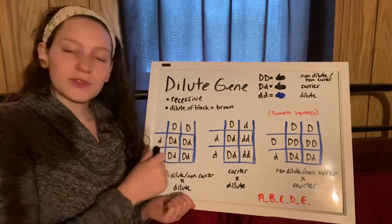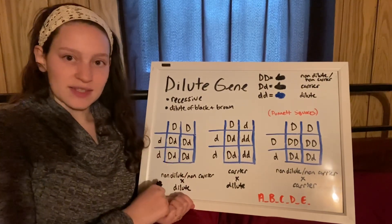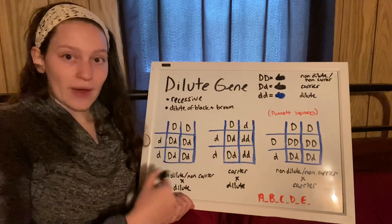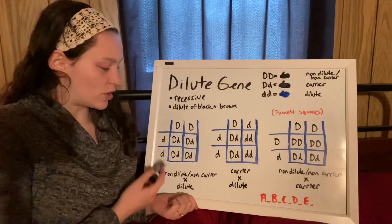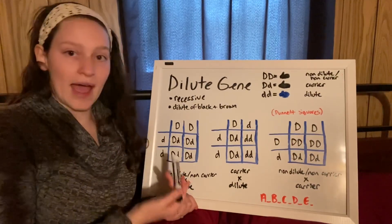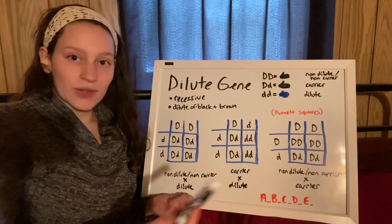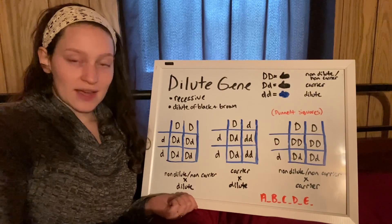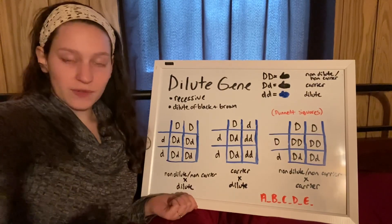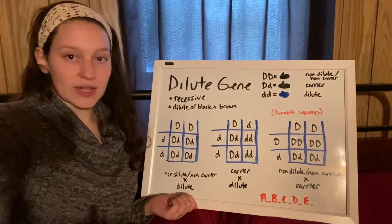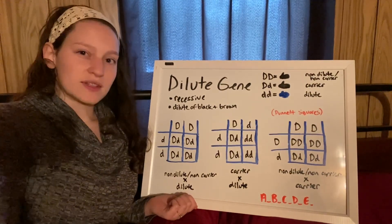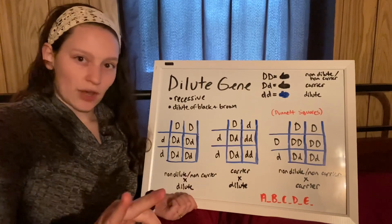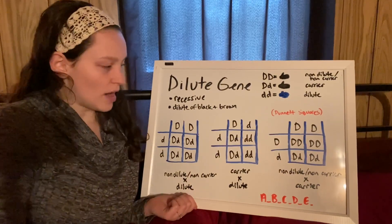Sometimes people do test breedings to see if their rabbit carries dilute or not, and this is one of the crossings that might happen. If you breed a dilute and a non-dilute a couple of times and you never get a dilute, chances are that non-dilute does not carry it.